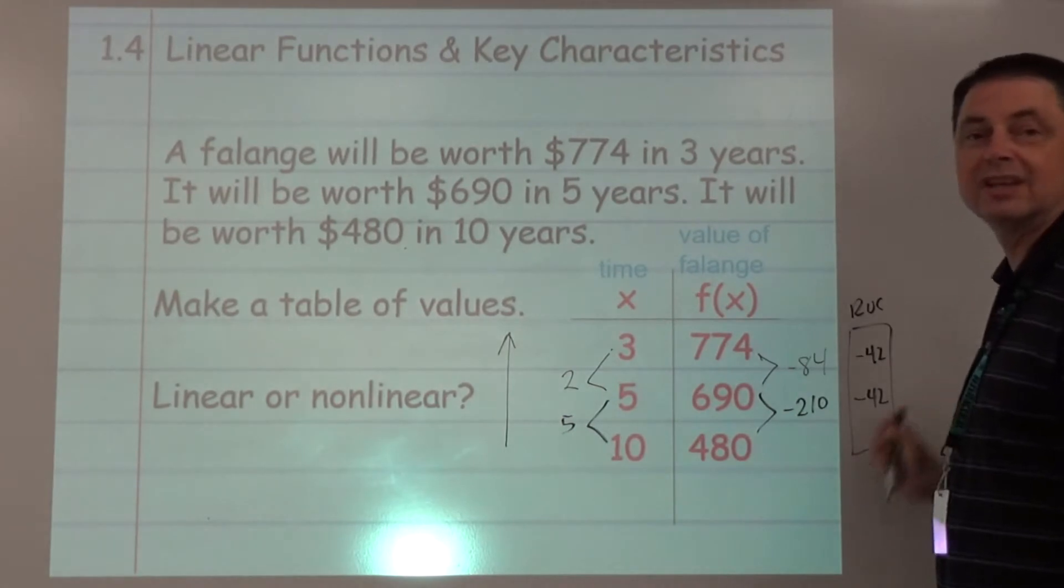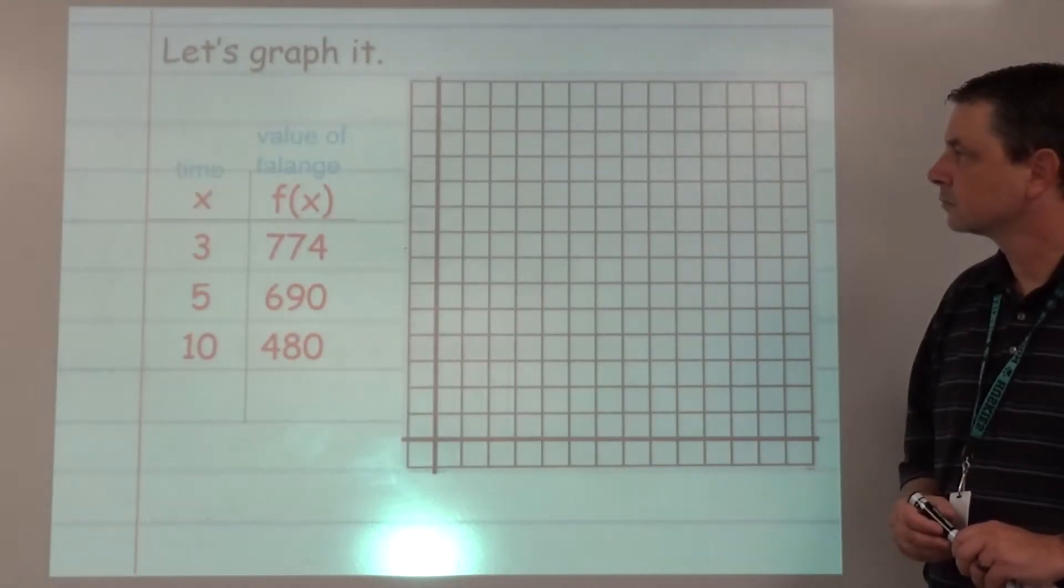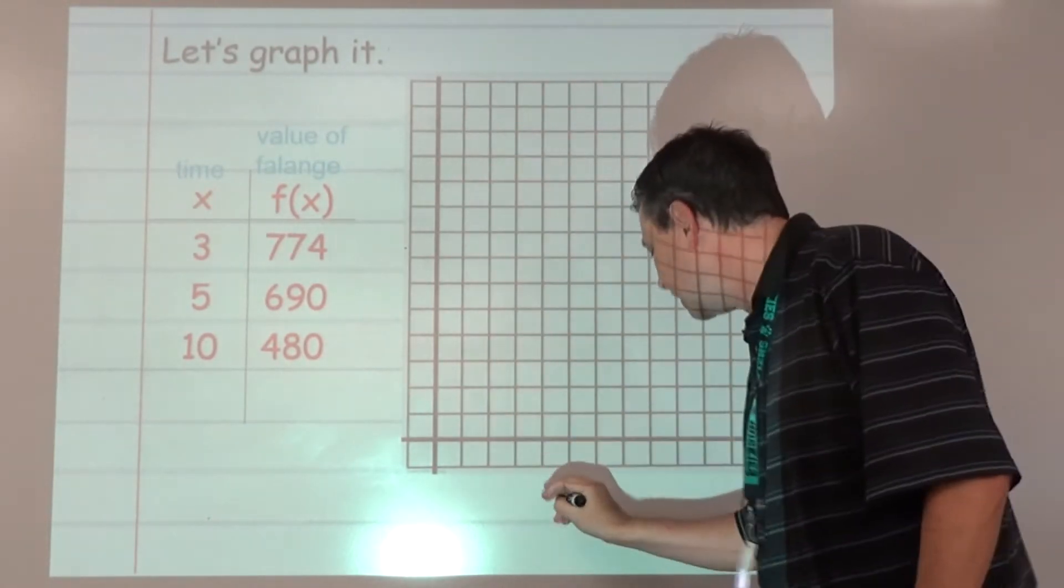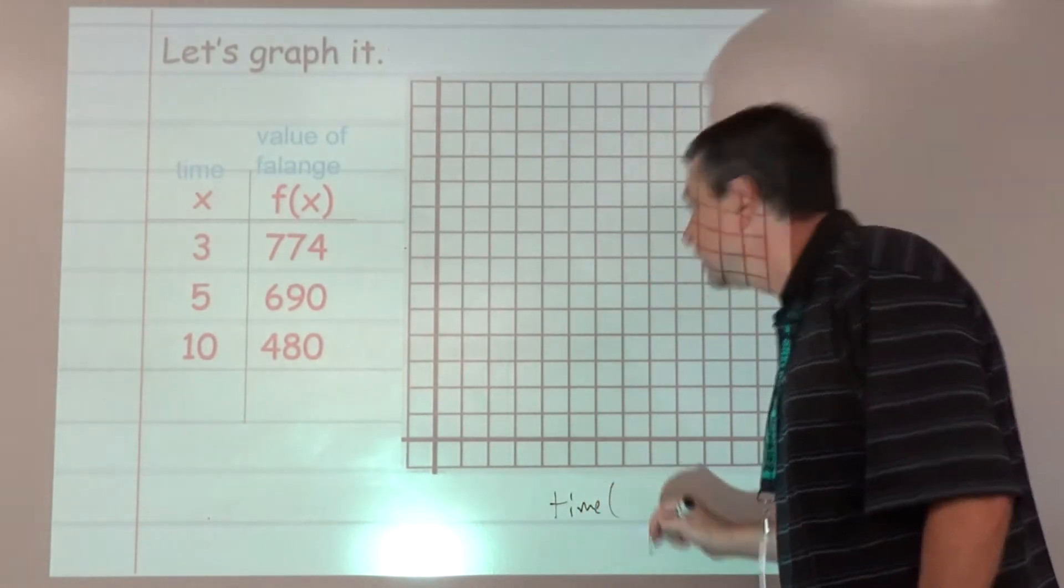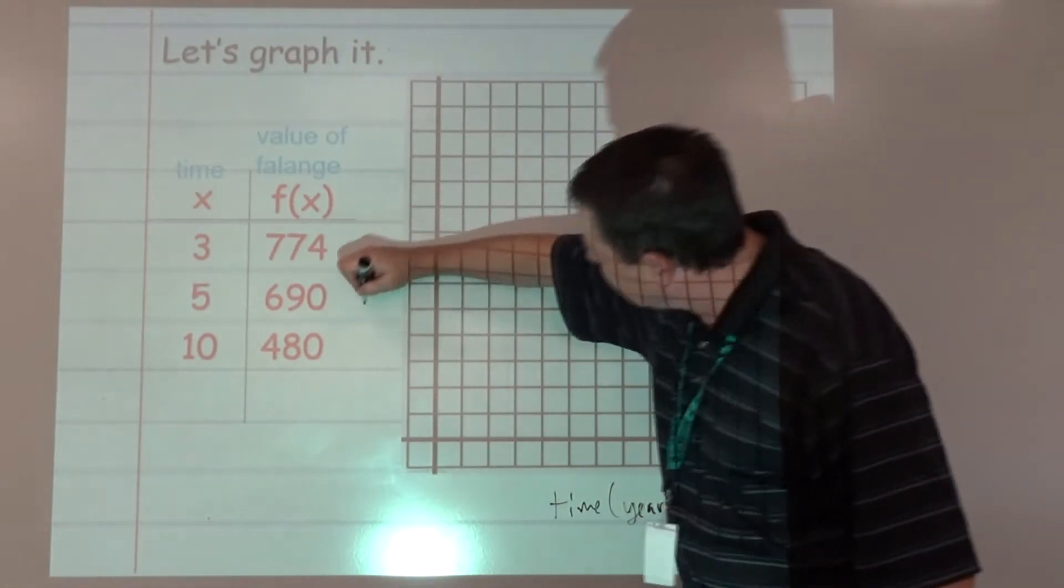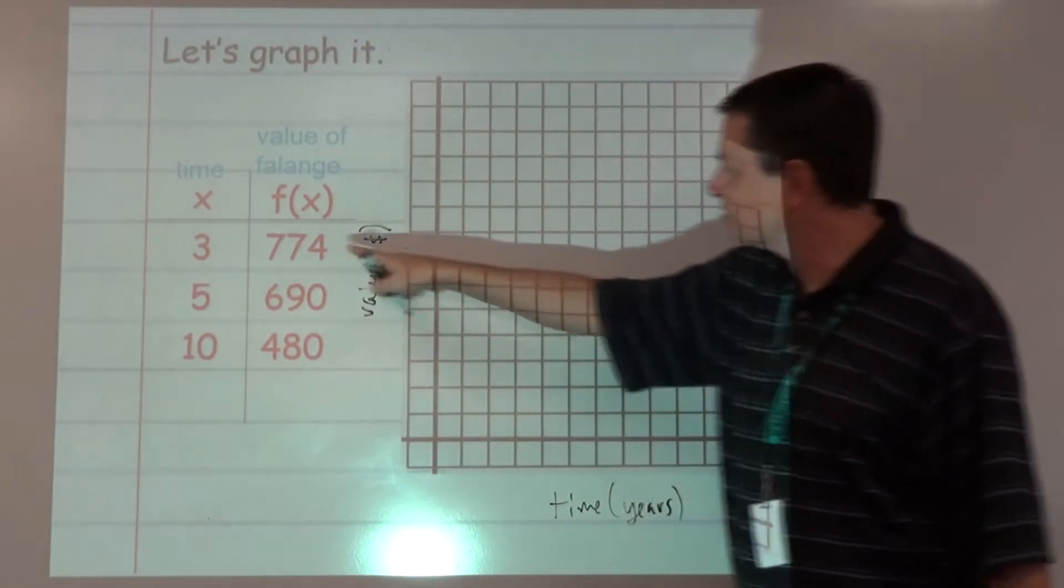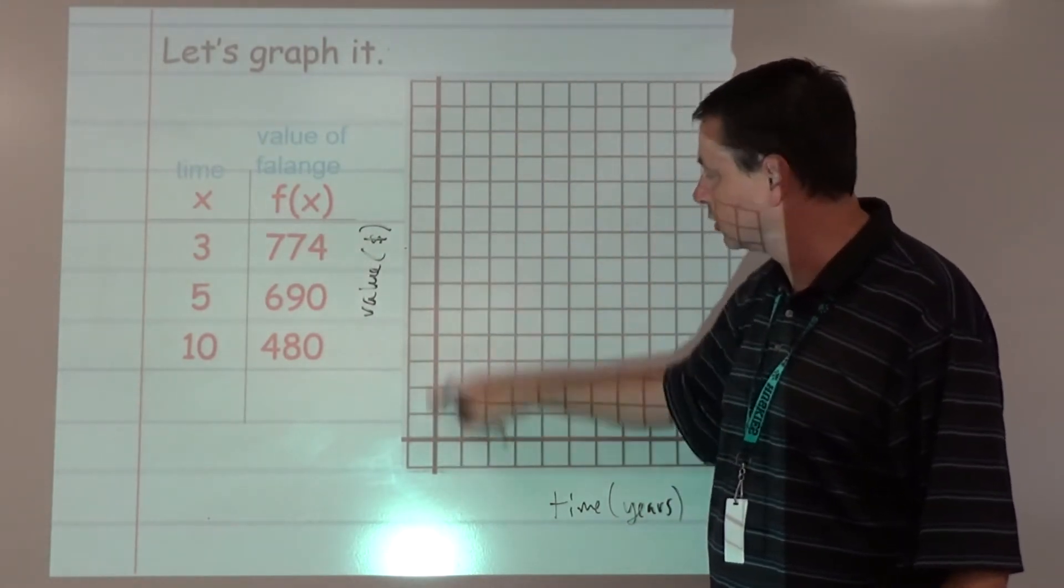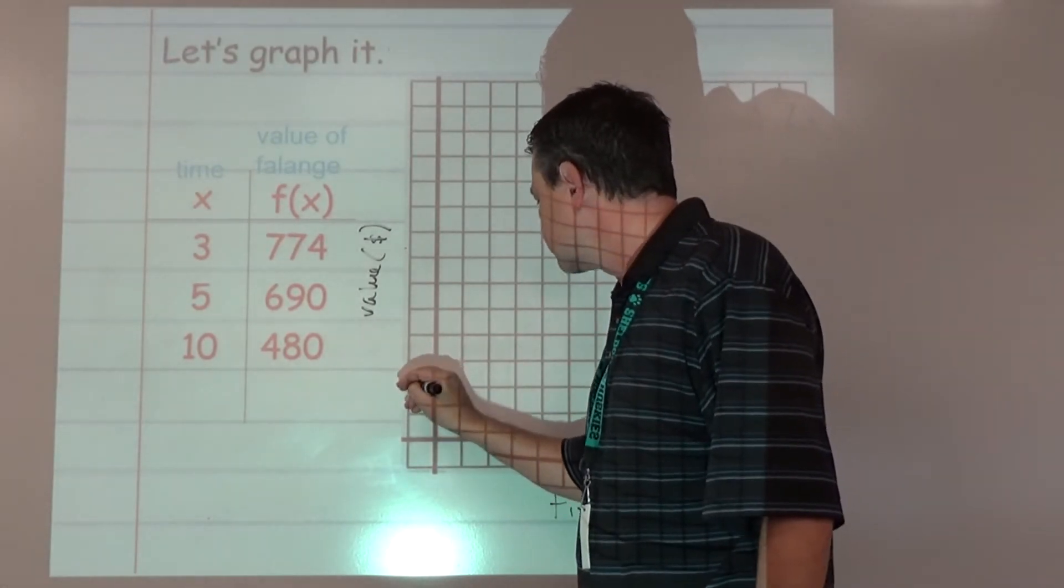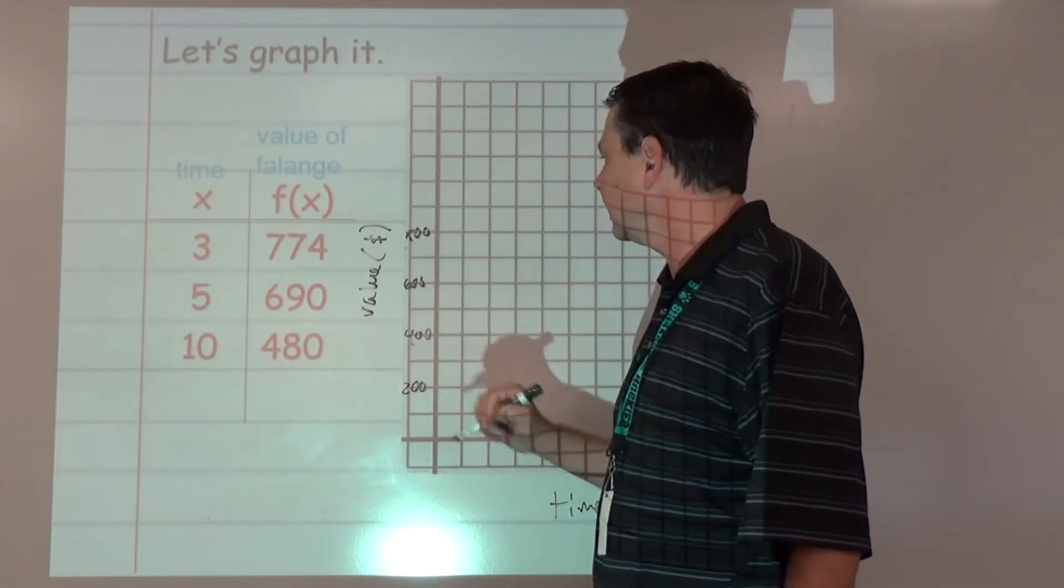We need to set up scale on the x-axis and y-axis. We've got time here in terms of years, and value over here in terms of dollars. But we can't really fit 774 on here, so we're gonna have to change our scale. Maybe we can make each one worth 100, so 200, 300, 400, 600, 800.